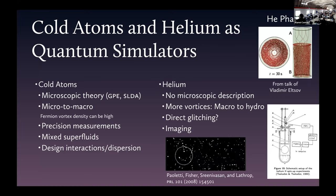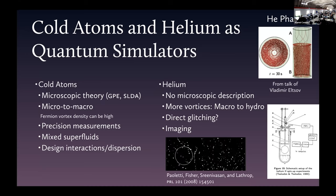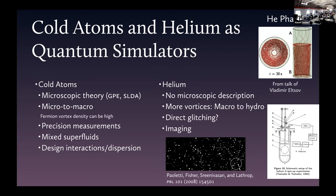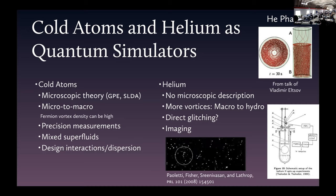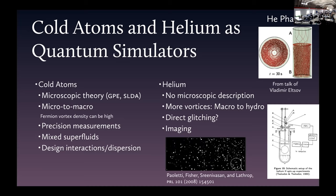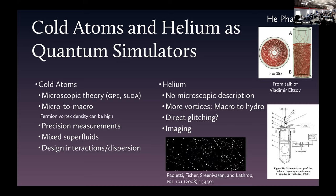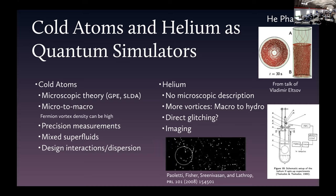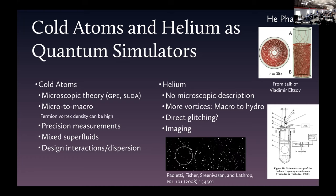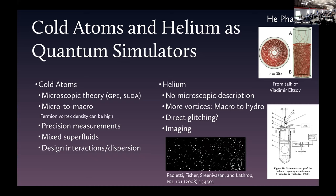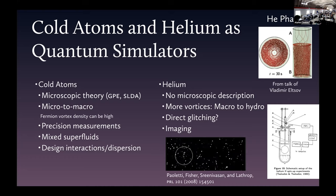Cold atoms work very nicely — there's a nice microscopic theory for some of these, but that needs to be tested. In particular, something called the SLDA, the superfluid local density approximation. Another system is helium — you've got helium-3 and helium-4, and in principle you could try superfluid mixtures there, but you need really cold temperatures. Right now we have two mixtures of hyperfine states in cold atoms — superfluid mixtures can happen with both fermions, fermi-bosons, or both bosons. Helium gives larger volumes, but there's no nice microscopic description for dynamics of helium, whereas we think we have one for cold atoms that needs testing.